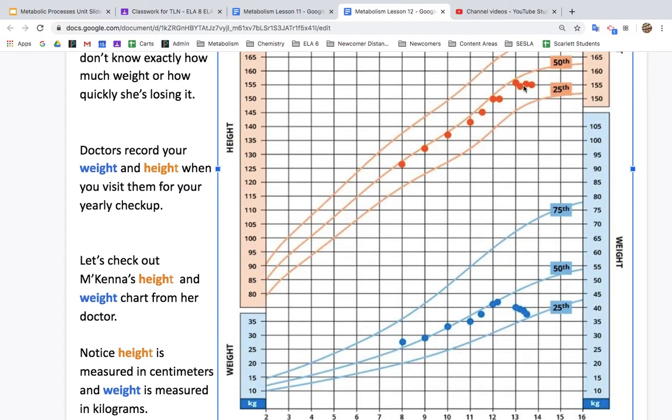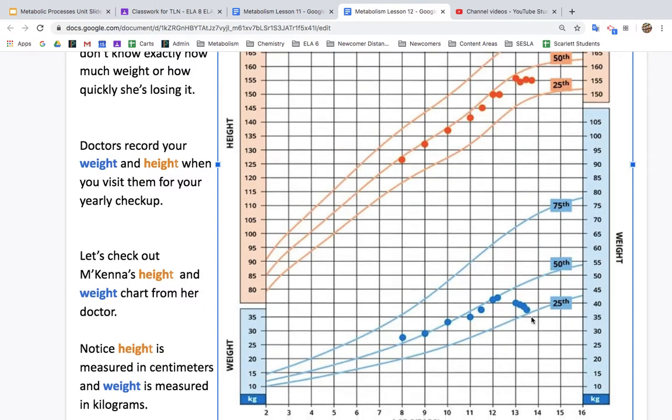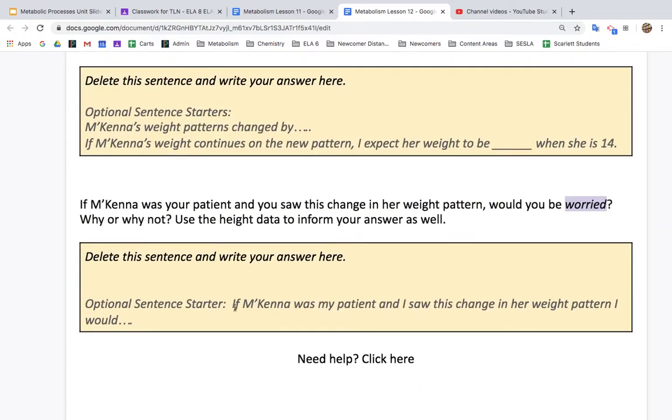And I would be especially worried because she's not growing like she was for her height. Her height should be going up, but it's not. Her height is staying the same and her weight is going down. That's very troublesome for me as a doctor.